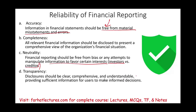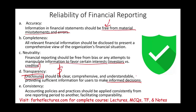Transparency means disclosures should be clear, comprehensive, and understandable — providing sufficient information for users to make informed decisions. Consistency is also important: accounting policies and practices should be applied consistently so users can compare information from period to period. These are general objectives, and we'll see later the specific control activities that help achieve each of them.